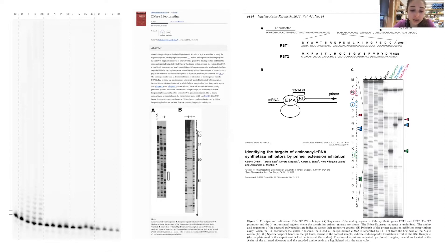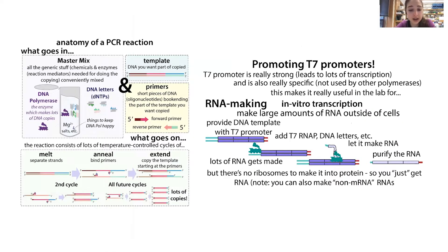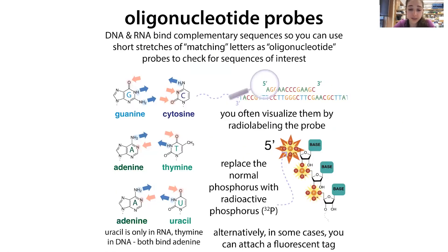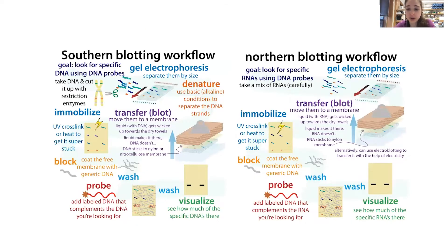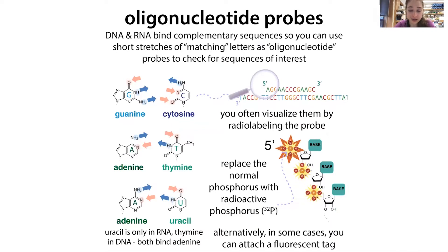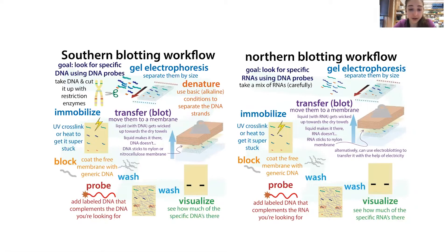Other times you don't actually use a gel. For example, in Southern blotting and Northern blotting, you use radioactive DNA probes to check for sequences that complement it. You take DNA for a Southern blot or RNA for a Northern blot, run a gel to separate those pieces by size, then transfer it to a membrane and probe it to see if the complementary sequence was present — taking advantage of strand complementarity and the fact that you can radiolabel these DNA pieces to allow them to serve as probes.